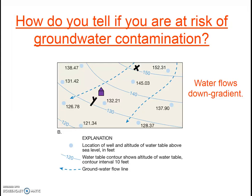Looking at this diagram, if you live in the purple house and there's a known pollution source next door at location Y, you are perhaps not at risk — you're up gradient. However, what if there was an old gas station leaking at location X, and since that time they paved over it and put in a mall, and you don't even know that it existed? Is your well at risk? Likely.